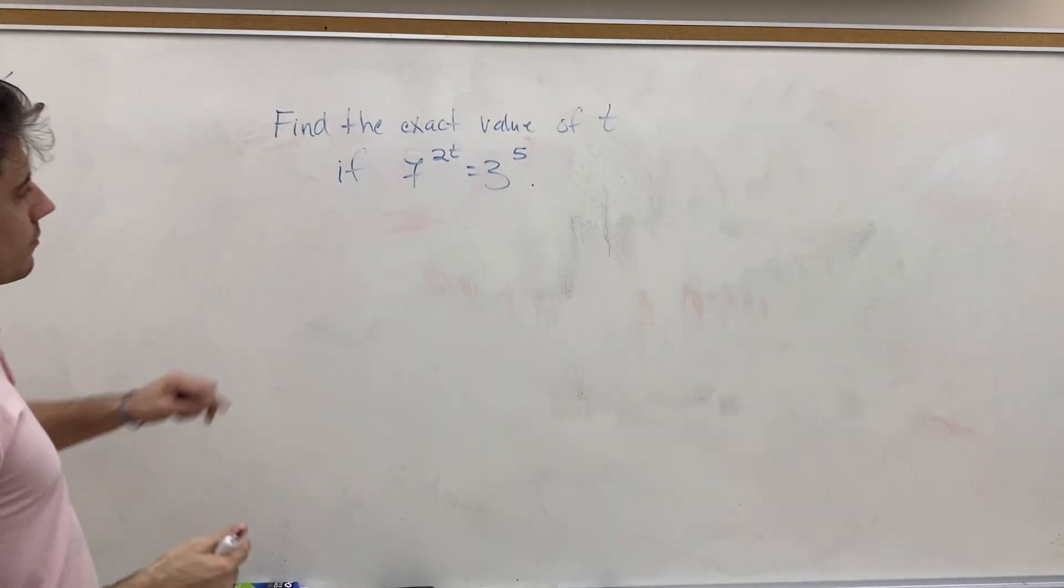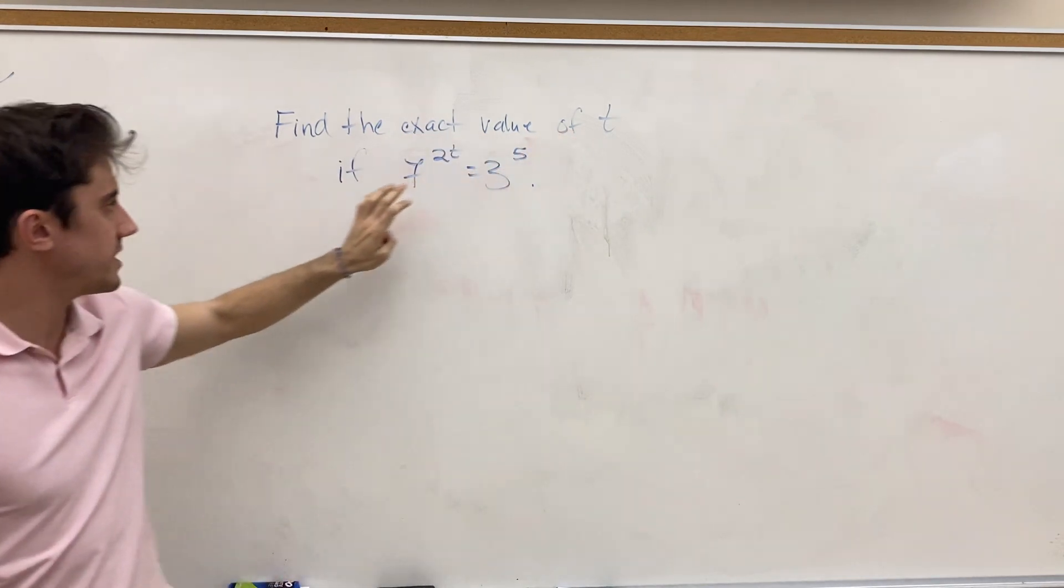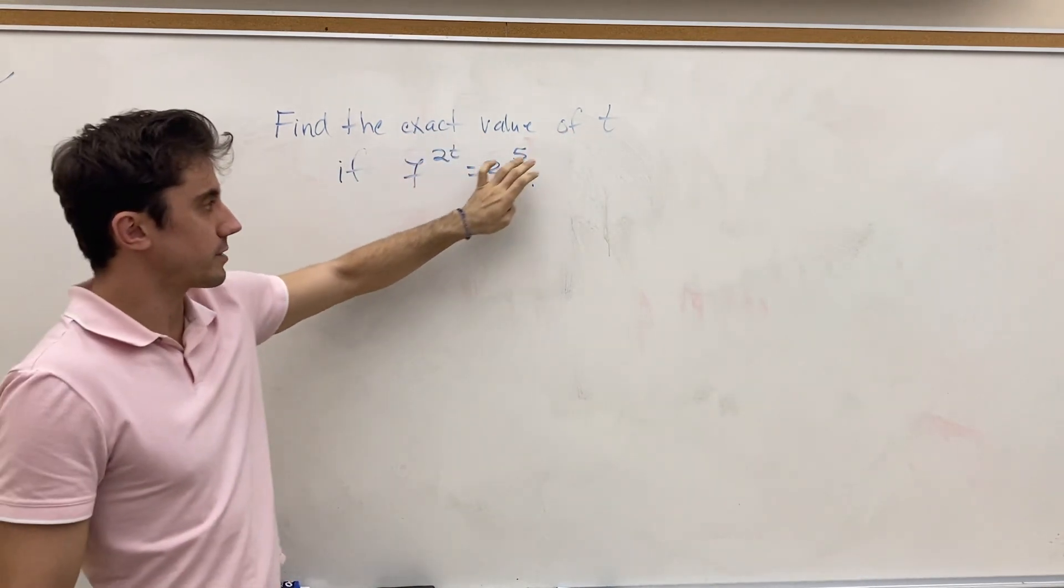Good afternoon, everyone. Today we're going to solve an exponential function, where they ask us to find the exact value of the variable t, given that 7 to the power of 2t is over 3 to the power of 5.